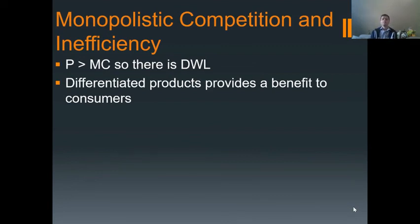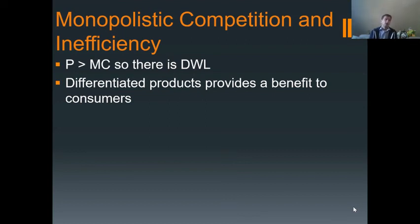Monopolistic competitors do create deadweight loss because price is greater than marginal cost. But we tolerate this a bit more amongst monopolistic competitors because differentiated products provide a benefit to customers — customers want that choice and don't want everything to be exactly the same. Philadelphians love to argue over which is their favorite cheesesteak place. Those cheesesteak places are, for the most part, monopolistic competitors — it's fairly easy to open up a new cheesesteak spot with relatively low barriers to entry. They all serve about the same food physically, but there are differences in terms of who has their favorites, and we argue about it all the time. So there is a benefit just due to personal taste.